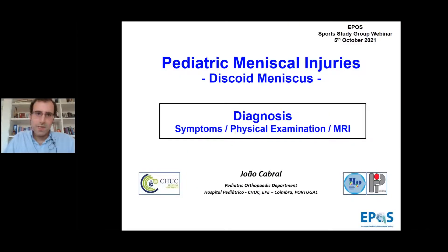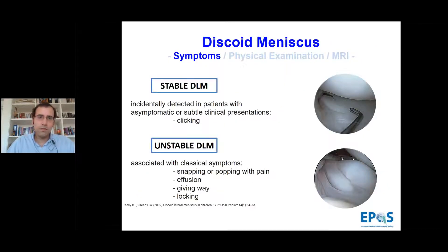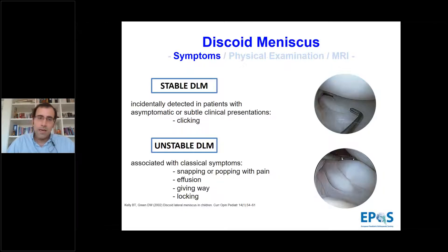Thank you, Marco. Now we go through diagnosis of discoid lateral meniscus, starting with symptoms, then physical examination, then imaging. In stable discoid lateral meniscus, they are incidentally detected in asymptomatic patients or with subtle presentations like clicking. In unstable discoid lateral meniscus, they are associated with classical symptoms: snapping or popping with pain, effusion, giving way, and blocking.